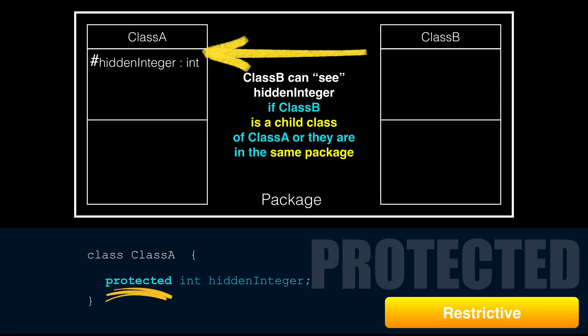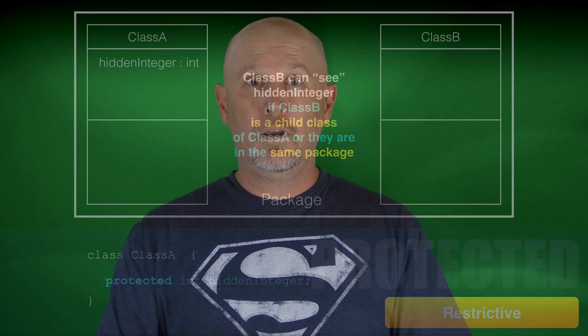PackageScope is more restrictive than protected. You cannot create a protected outer class. We'll cover this more in later lessons. We use the pound or hashtag symbol to denote protected methods and attributes.